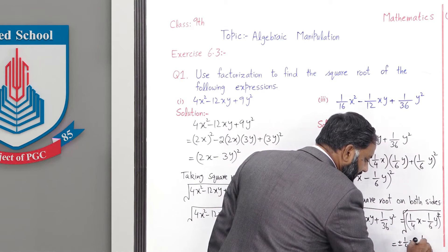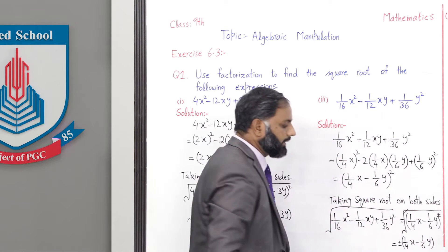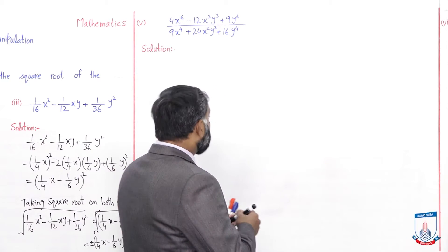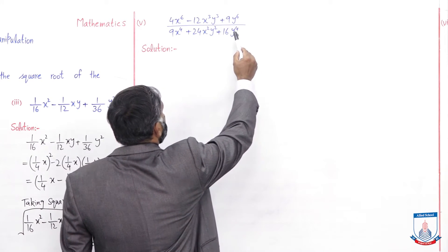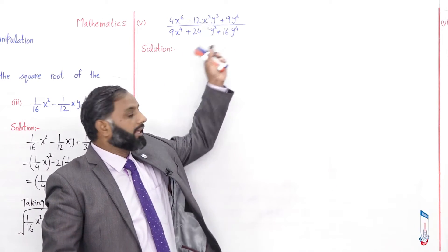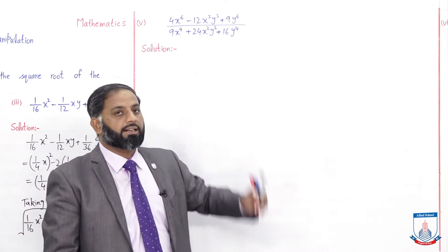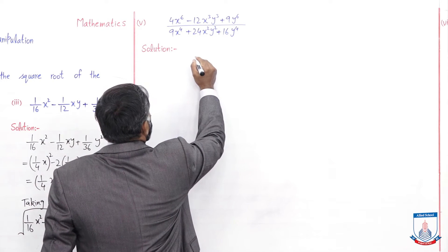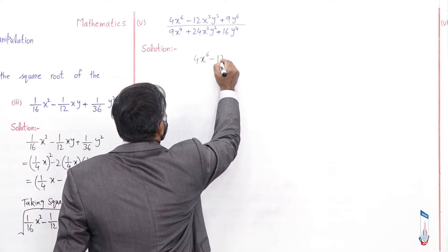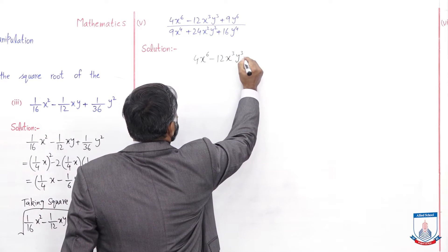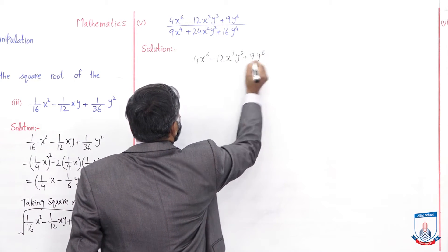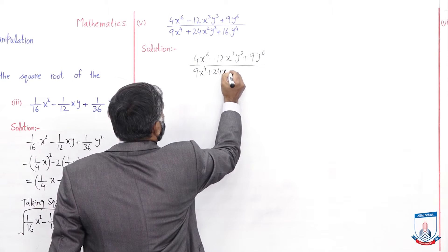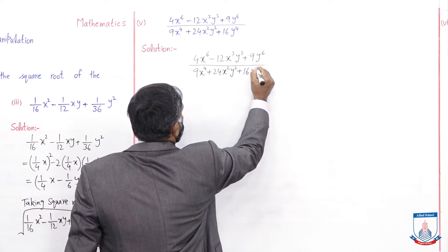अब part 5 solve करेंगे — यह थोड़ा सा different है, इसमें numerator भी है denominator भी है। तो numerator का अलग से square complete करेंगे और denominator का square अलग से complete करेंगे, फिर square root लेंगे। Given question: (4x⁶ - 12x³y³ + 9y⁶) ÷ (9x⁴ + 24x²y² + 16y⁴)।